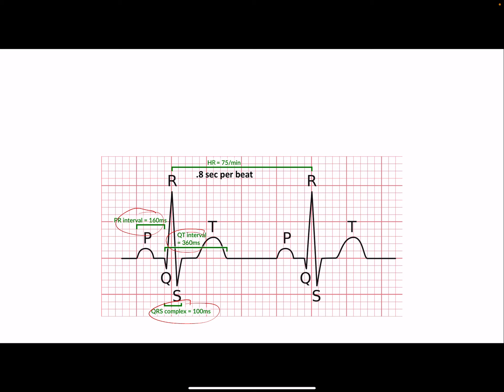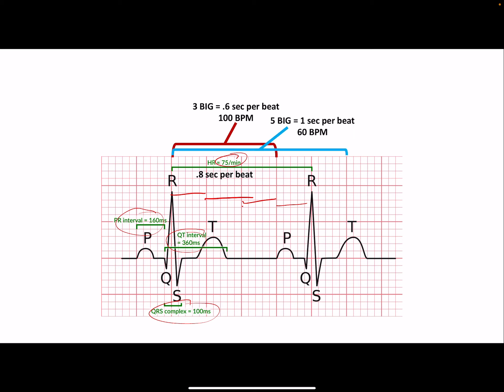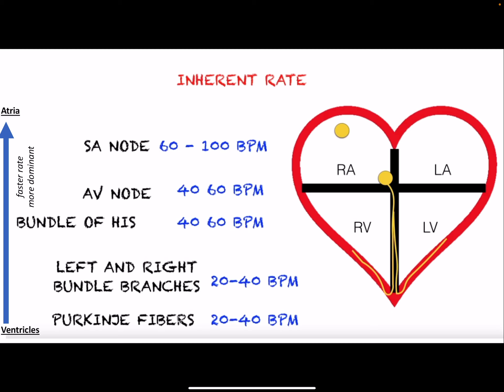To calculate heart rate: if there are four big boxes between beats, that's 0.8 seconds per beat, so 60 ÷ 0.8 = 75 bpm. Three boxes gives 100 bpm; five boxes gives 60 bpm. The RR interval is the best way to determine if the rhythm is sinus, and whether it's tachycardia or bradycardia.